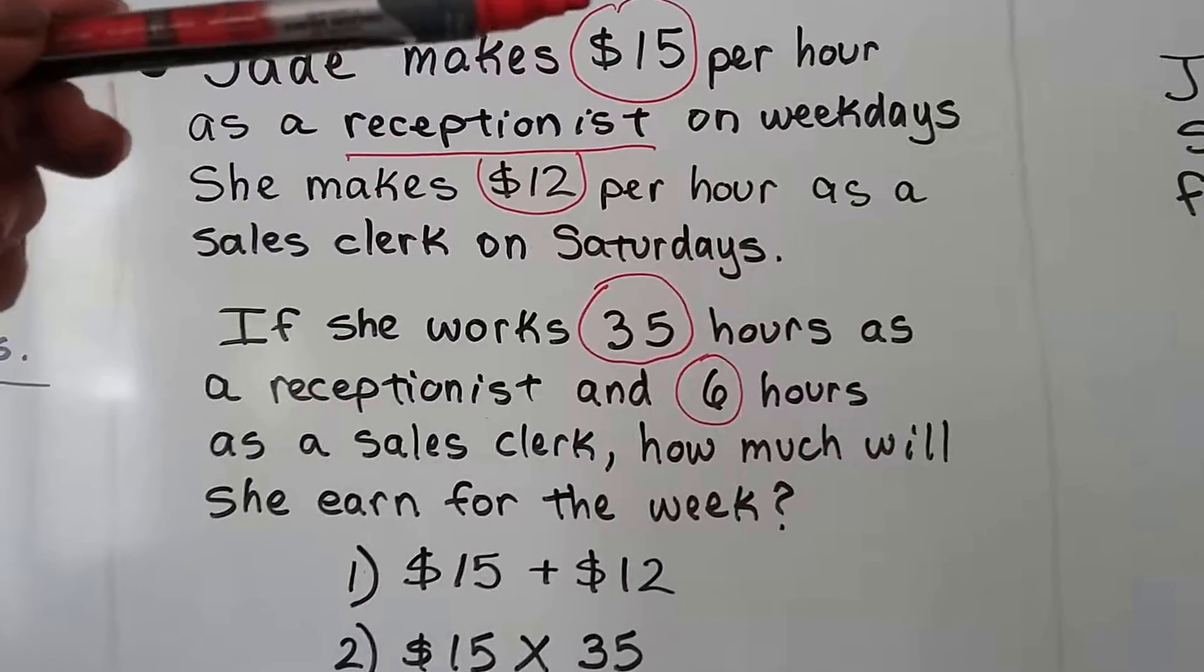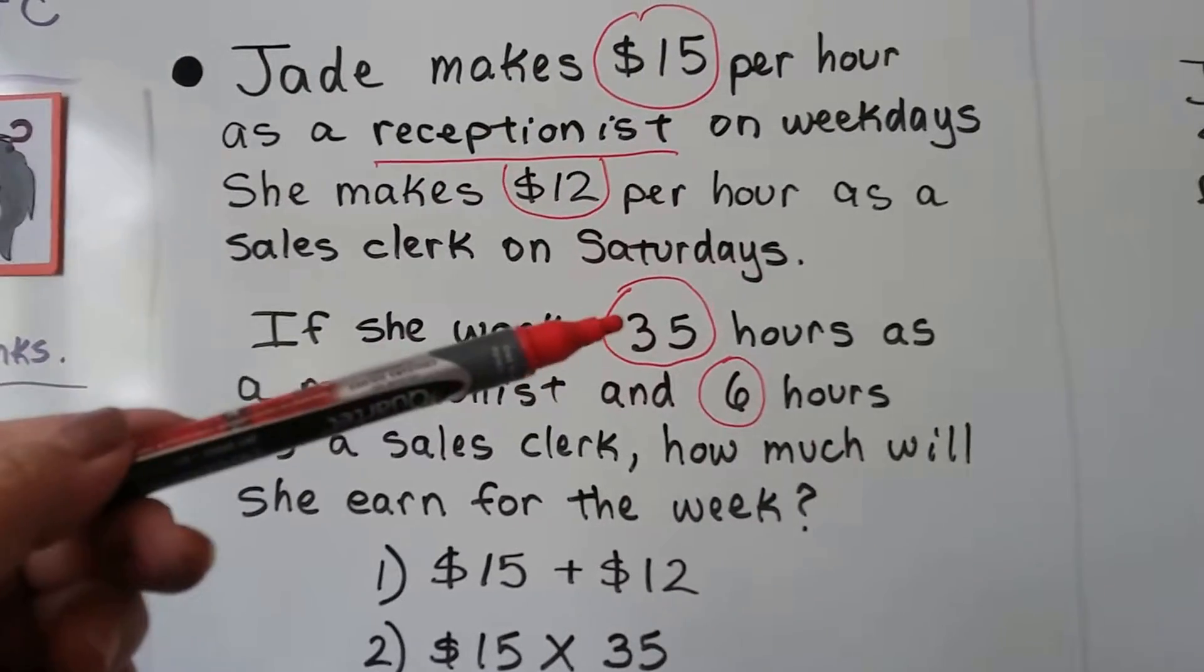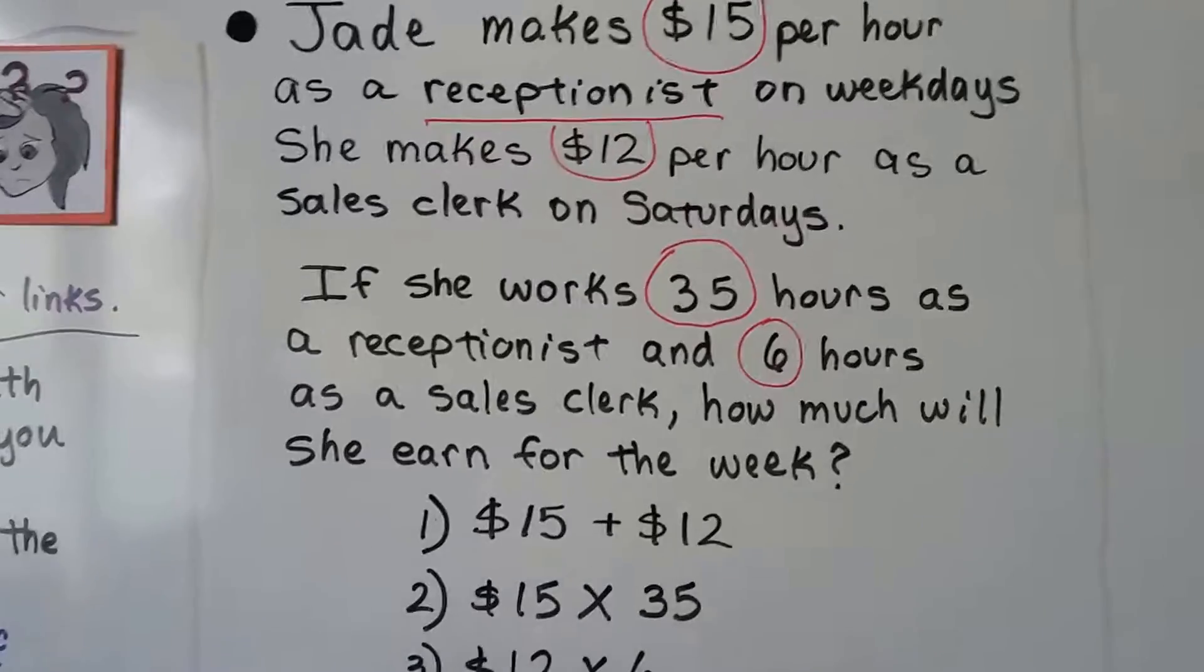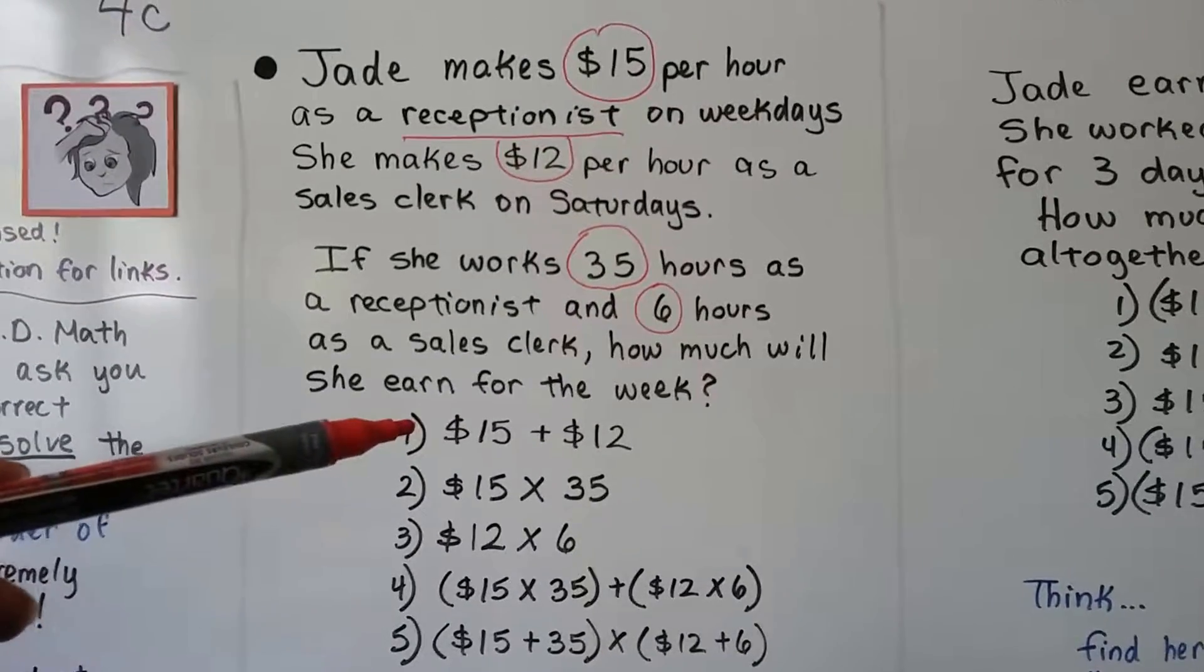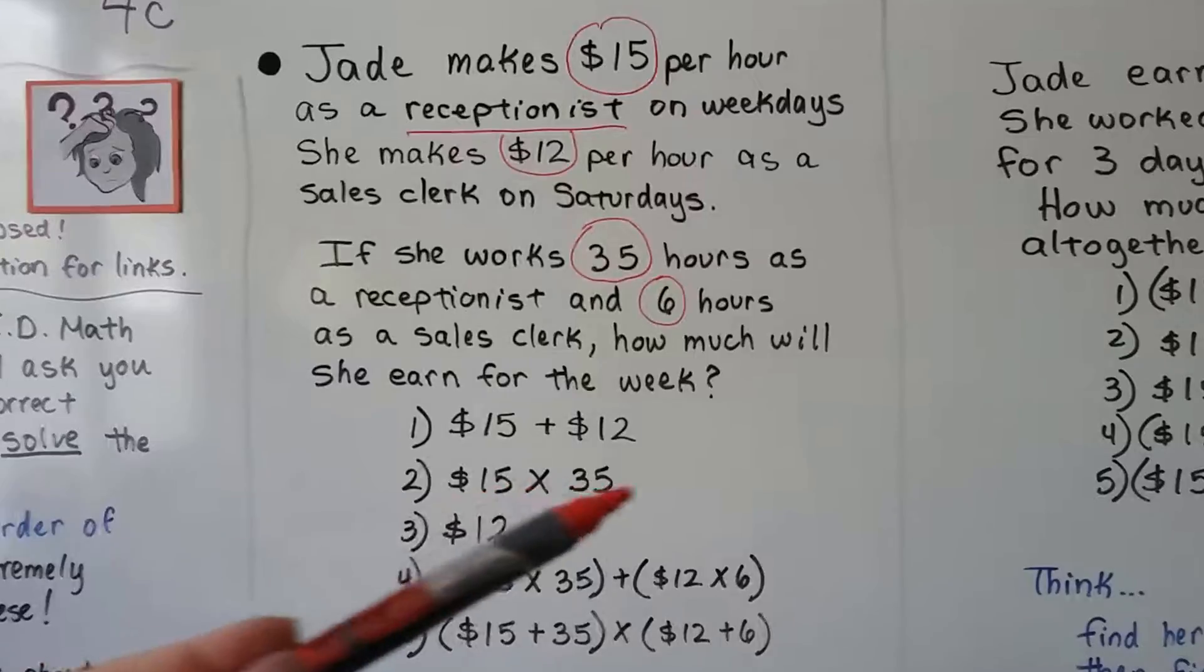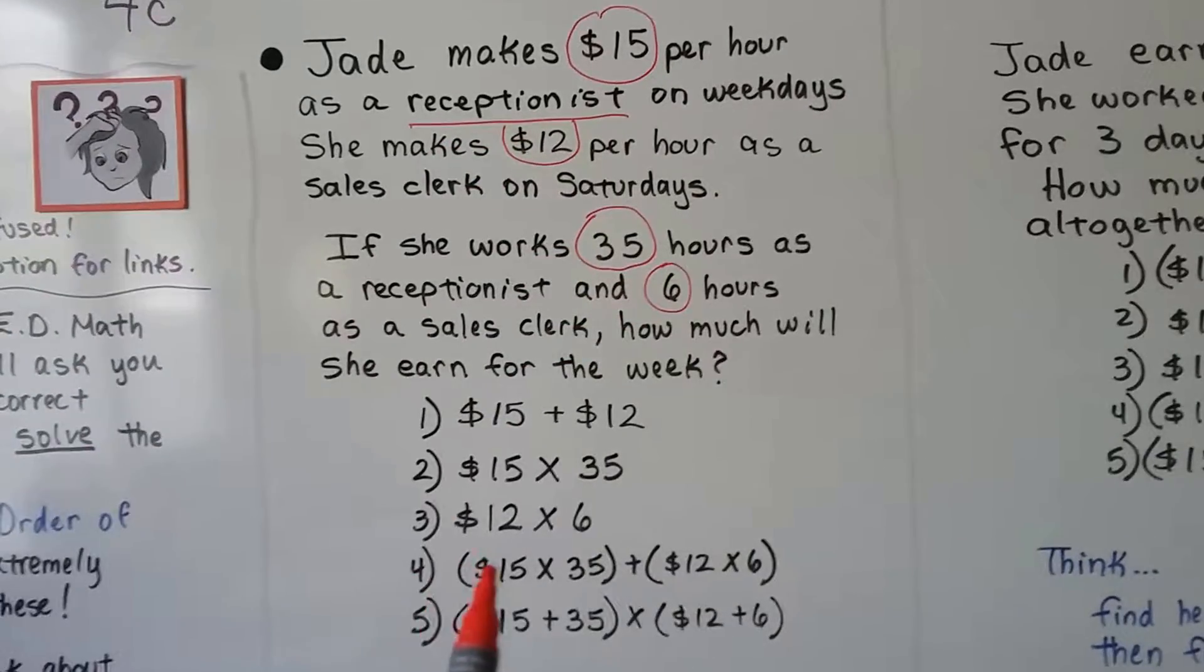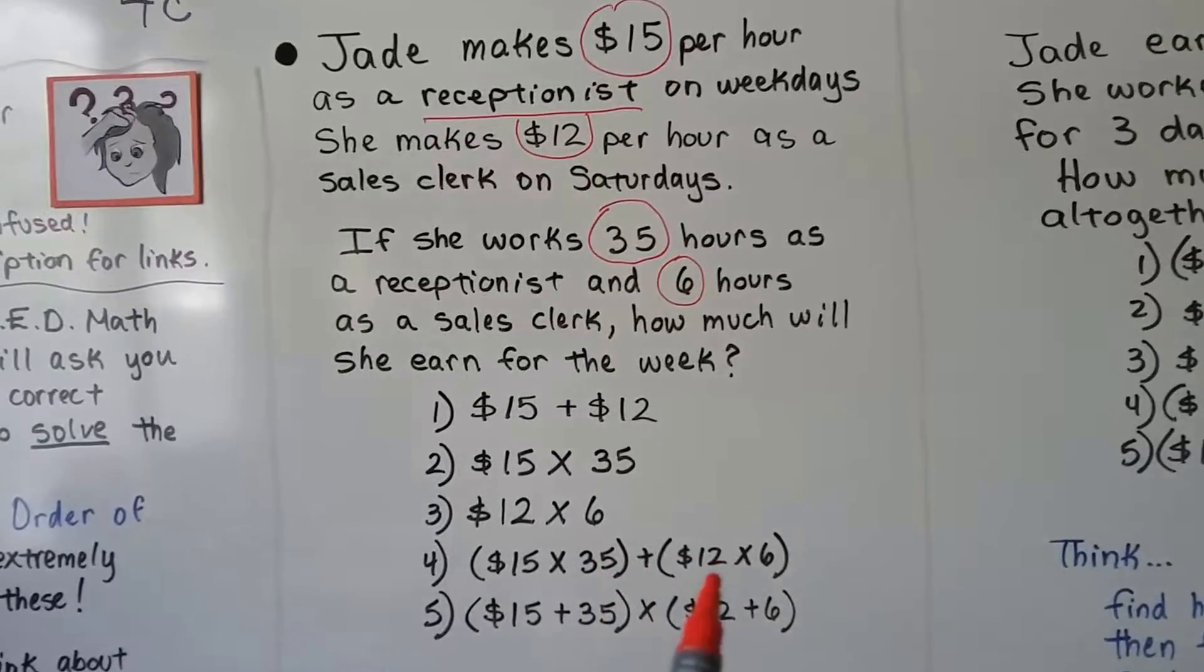So the first thing we need to do is recognize how to write the $15 per hour for 35 hours as an equation, and then the $12 per hour for six hours, and put them together to get a grand total. So here's our choices. Should we add the $15 plus the $12? Should we multiply the 15 times the 35 hours? Should we multiply 12 times six, the $12 per hour times the six hours? Or should we multiply the $15 times the 35 hours, and then add the $12 times the six hours?